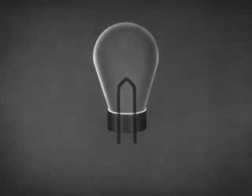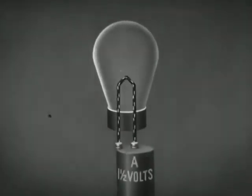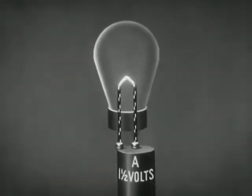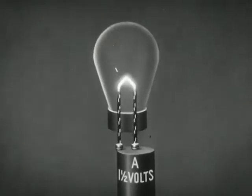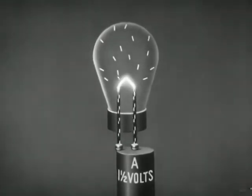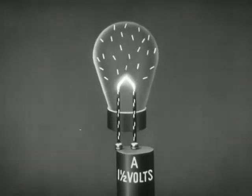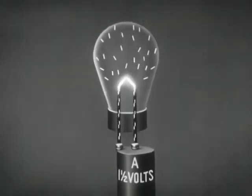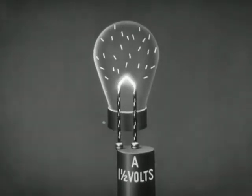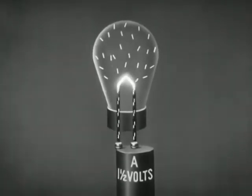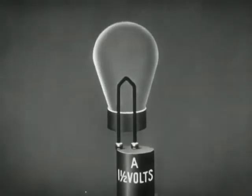A tungsten filament extends into a tube such as this. A cell supplies a current which heats the filament. When the filament gets hot enough, electrons are emitted. The electrons build up a space charge in the tube. As the charge builds up, electrons are repelled back to the filament, and finally as many return as leave.